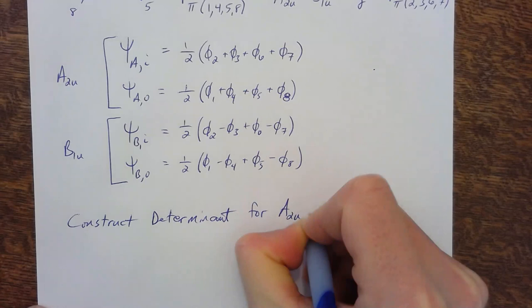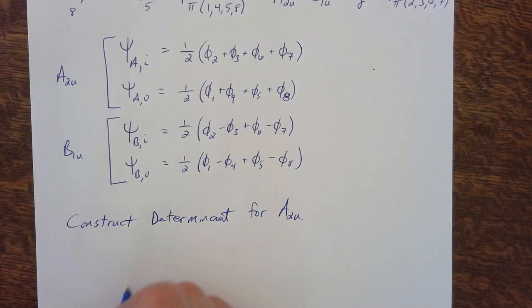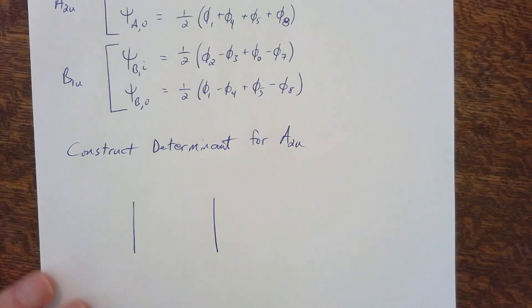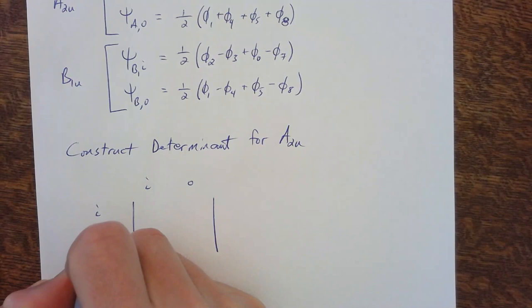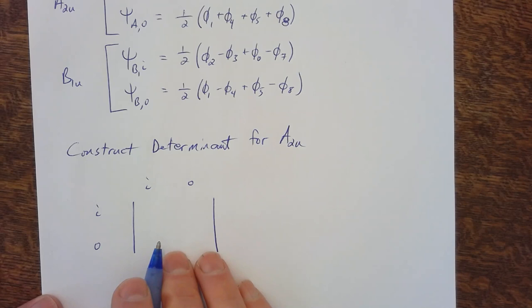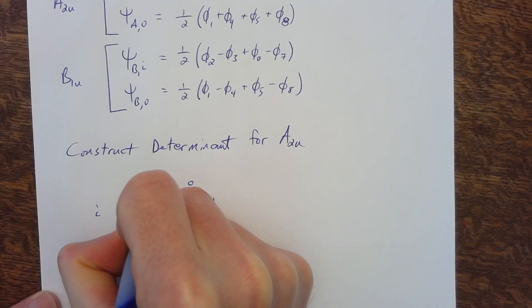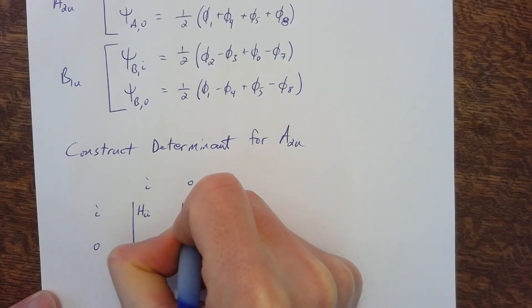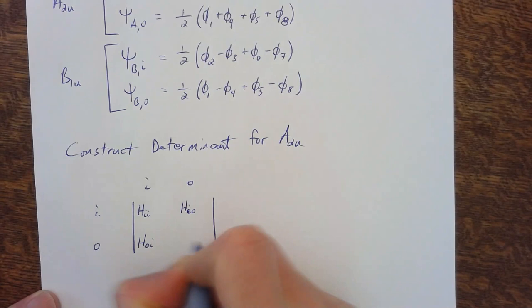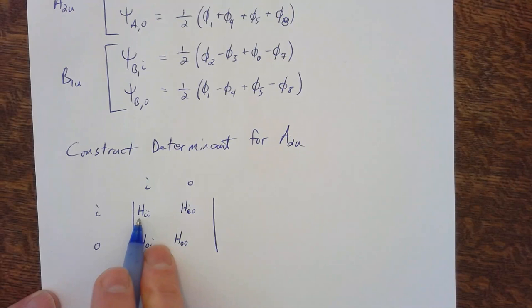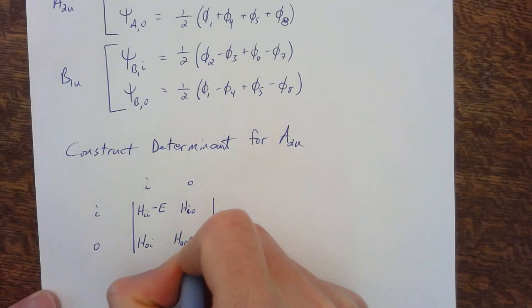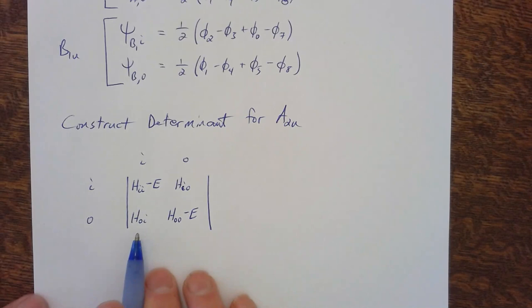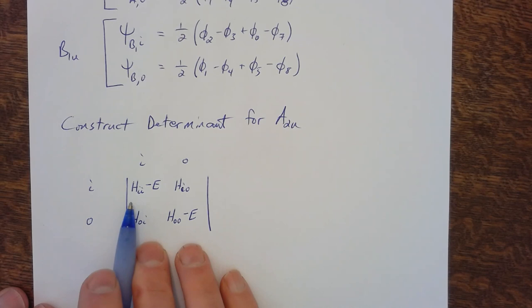Let's construct the determinant for the A2U representation. The rows and columns are labeled by the inner (I) and outer (O) combinations. We have integrals H_II, H_IO, H_OI, and H_OO. Along the diagonal we subtract E. So this is the secular determinant for this representation, and we need to work out each of these integrals.